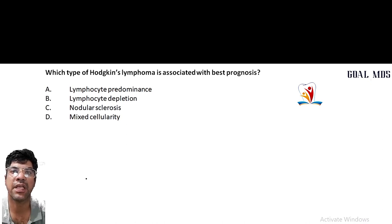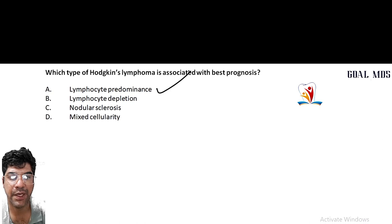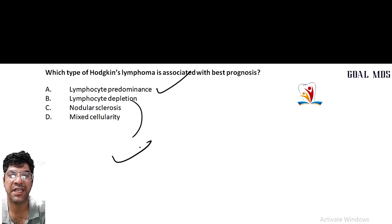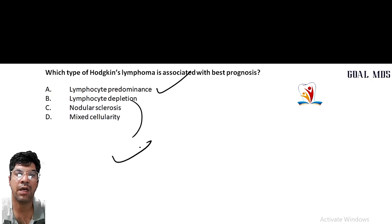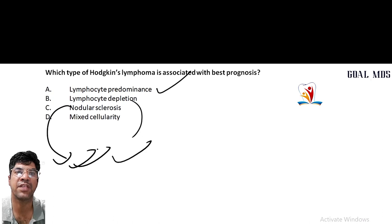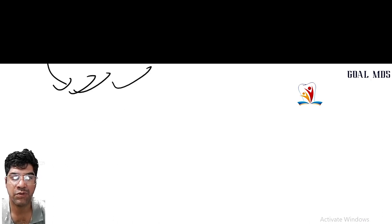Which type of Hodgkin lymphoma is associated with the best prognosis? Lymphocyte predominant is associated with the best prognosis. Which subtype is associated with the worst prognosis? Lymphocytic depletion. Remember that nodular sclerosis is the most common variety and has a favorable prognosis.